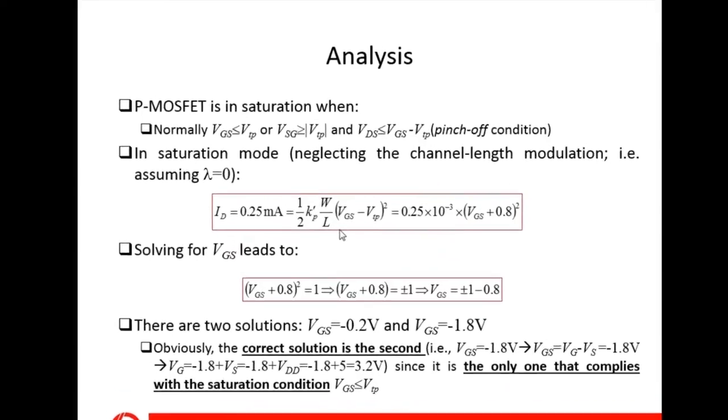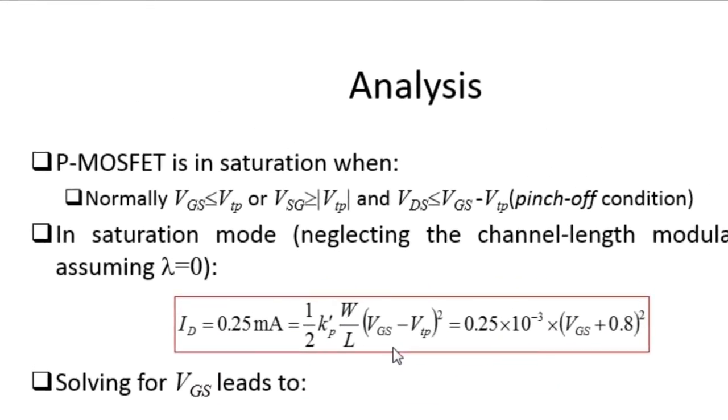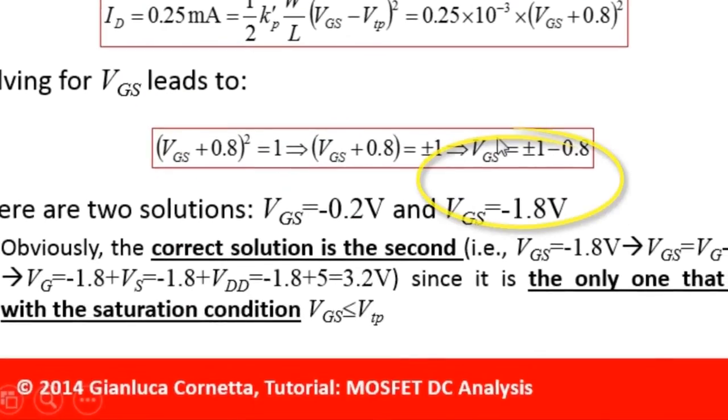In my pencil and paper calculation, I will use a very simple SPICE level 1 model. The drain current is related to the process parameter, the transistor aspect ratio, and the VGS through this simple equation. Solving this equation leads to a VGS equal to minus 1.8V.